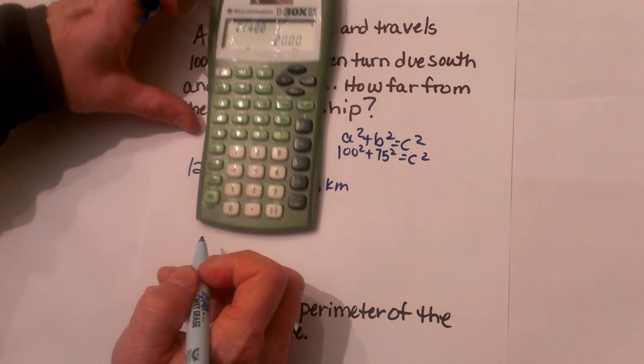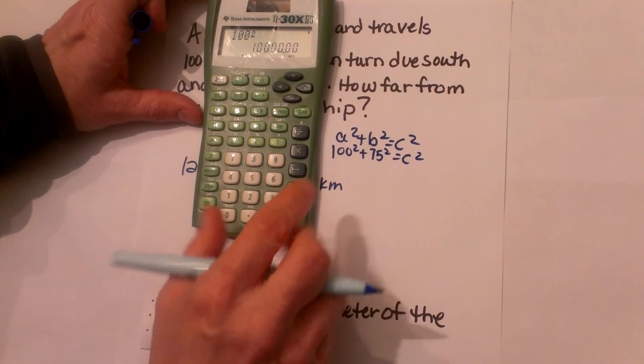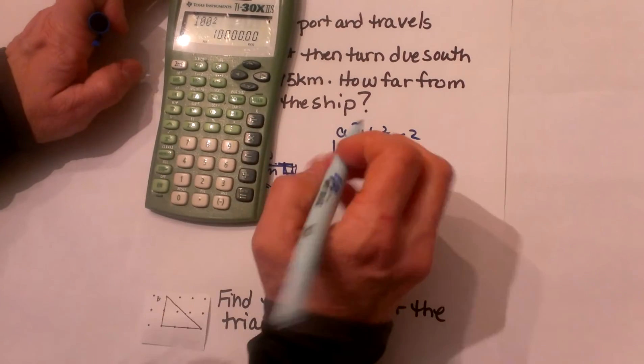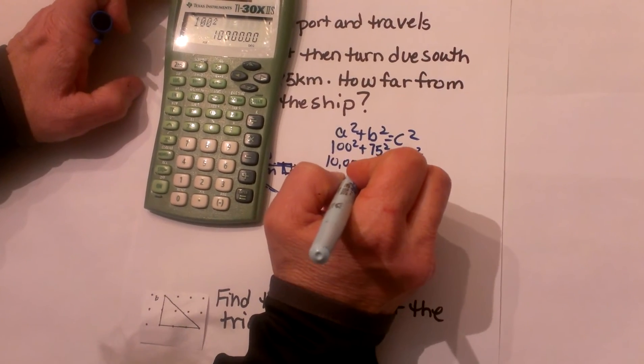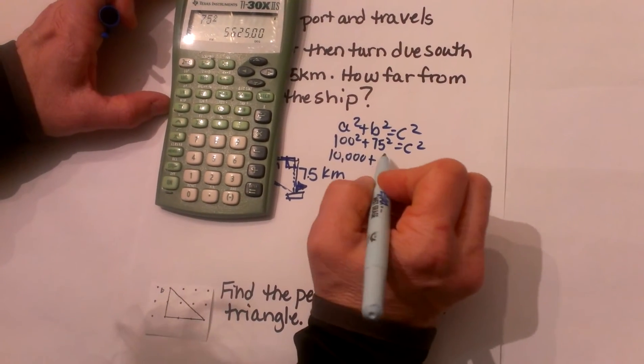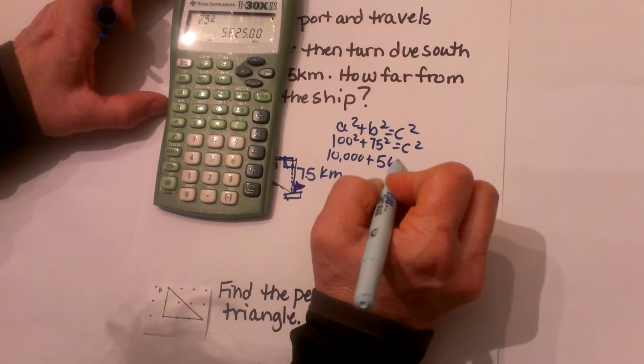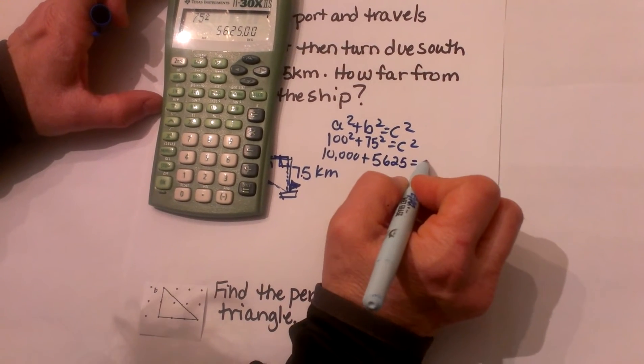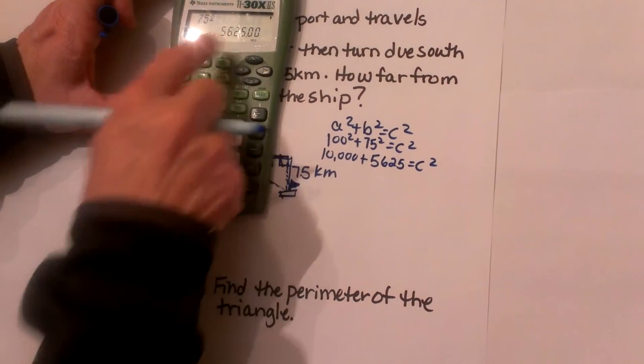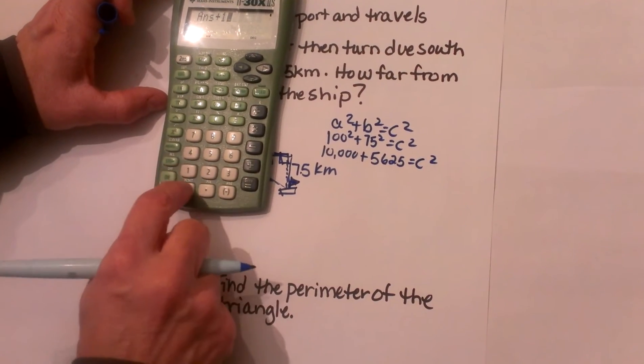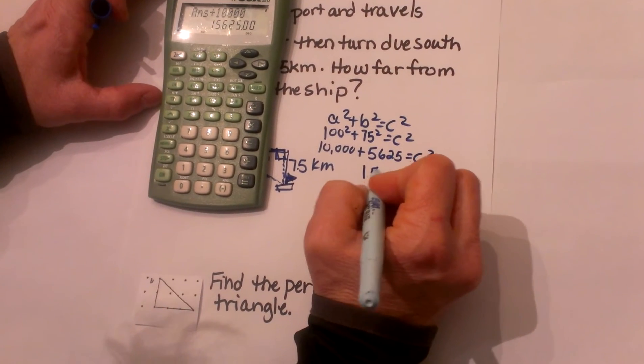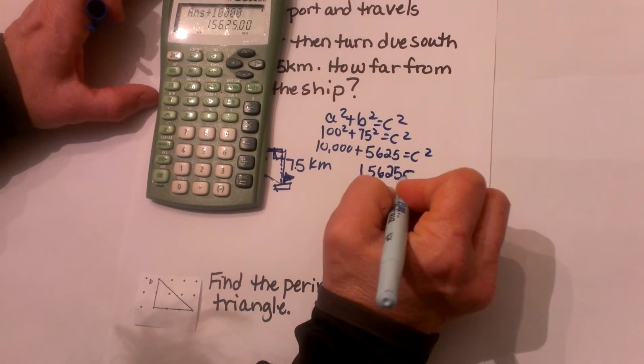Well, 100 squared is 10,000, plus 75 squared is 5,625, and that gives me 15,625 equal to c².